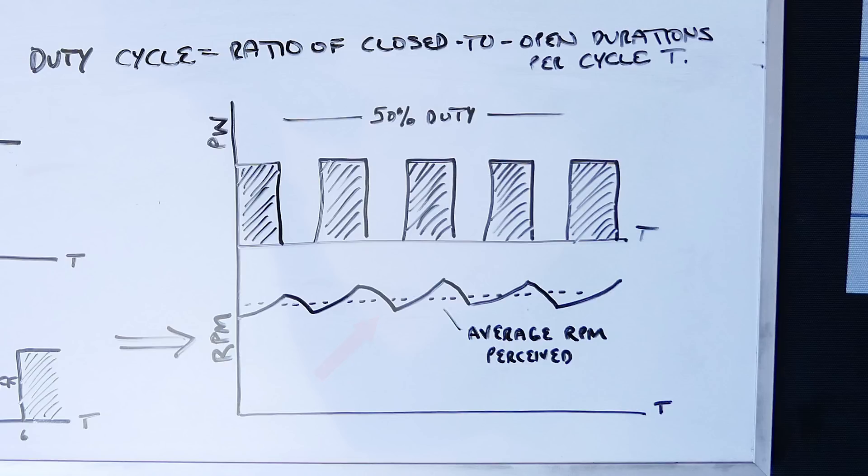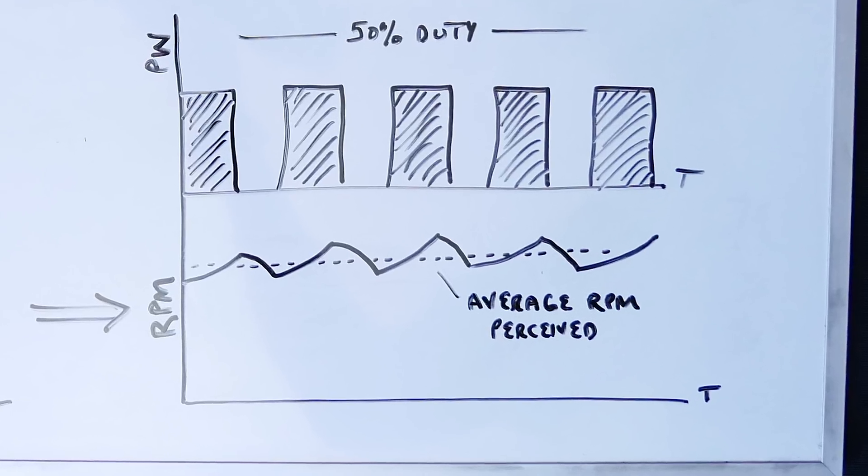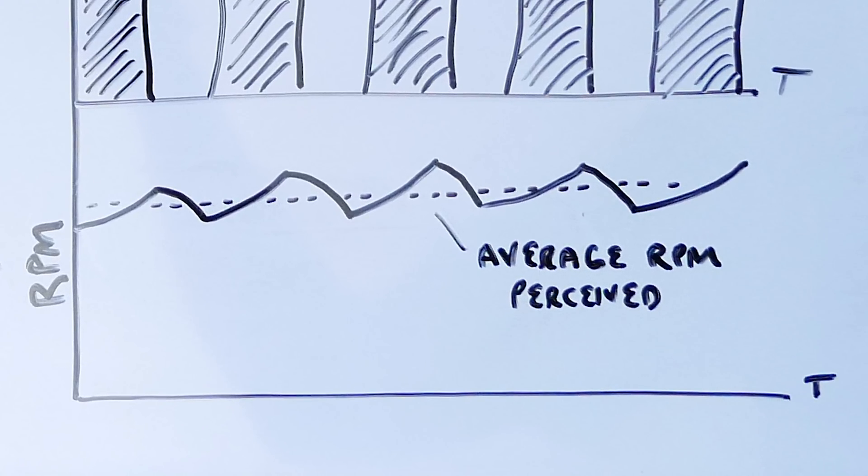So when PWM mode is active, the corresponding fan will literally turn on and off in essence by varying degrees to maintain the desired RPM. That's why we can achieve such low RPMs with these fans. It just occurs so quickly that we don't see or hear it happening. And do keep in mind that these values and recoveries will vary from fan to fan.